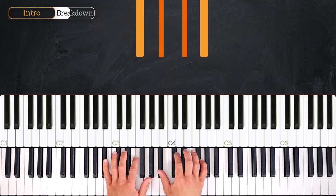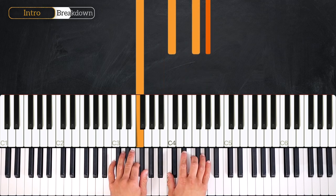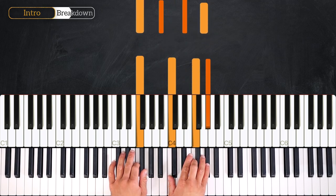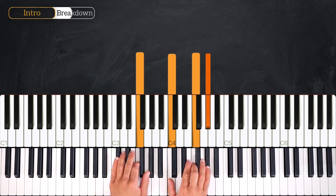Then we'll play Eb over F. 1, 2 into F minor. We just hold the bass. So it goes 1, 2, 3, 4.